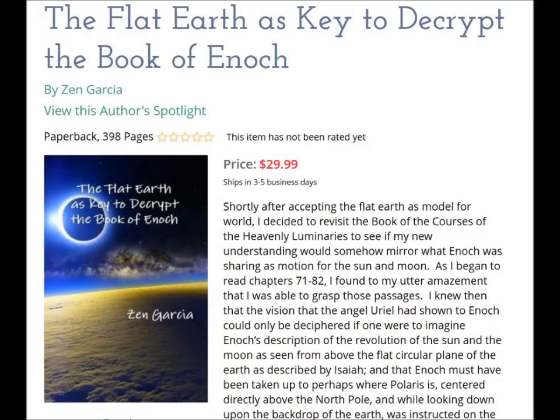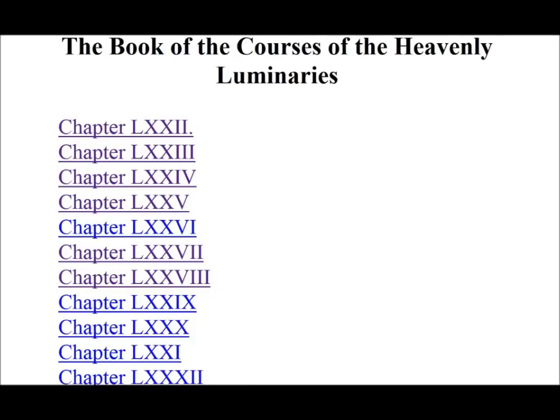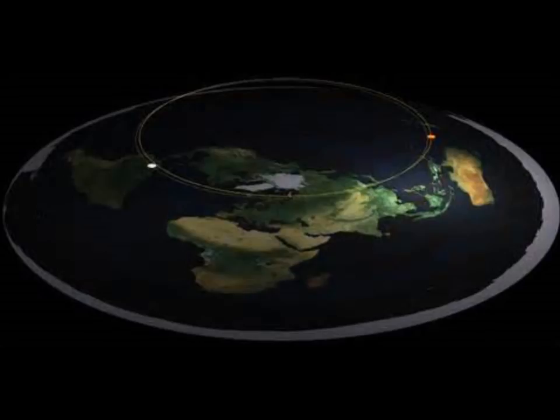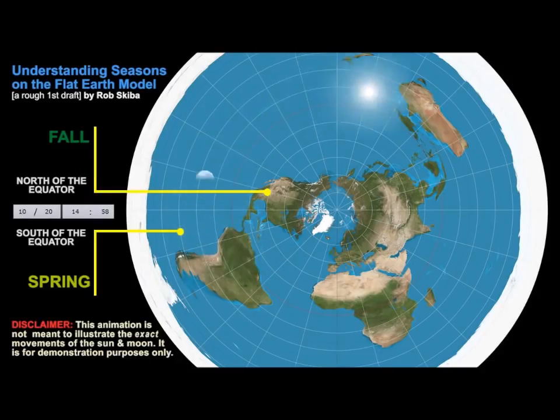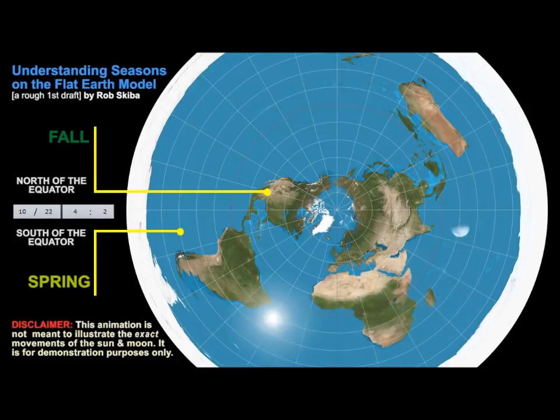In that book I cover a portion of the Book of Enoch called The Courses of the Heavenly Luminaries, which describes in 14 chapters a detailed description of the movements of both the sun and the moon through the six gates of heaven, which lie between both tropics — the Tropic of Capricorn and the Tropic of Cancer.